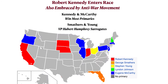That threw everything open. Robert Kennedy — younger brother of John F. Kennedy, former Attorney General — entered the race and was also embraced by the anti-war movement, though he was a somewhat more conventional New Deal Democrat than McCarthy. Between them, Kennedy and McCarthy won most of the primaries: McCarthy winning Massachusetts, New Jersey, Pennsylvania, Wisconsin, Illinois, and Oregon; Kennedy winning Indiana, South Dakota, Nebraska, and most importantly California.